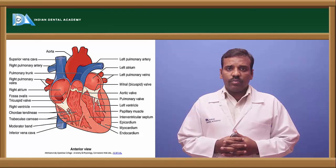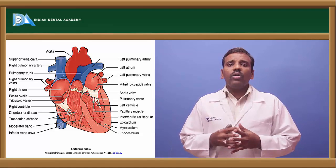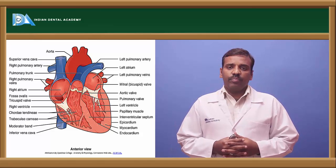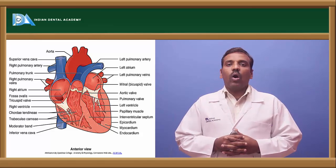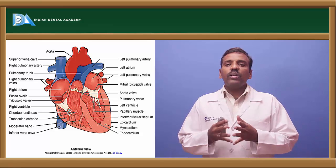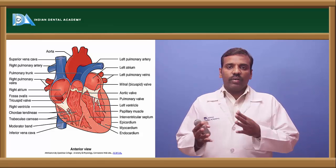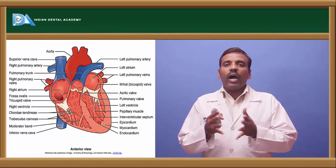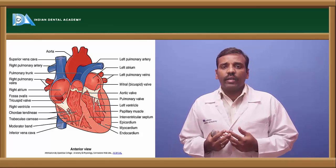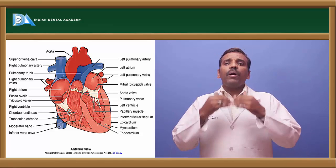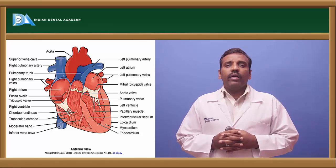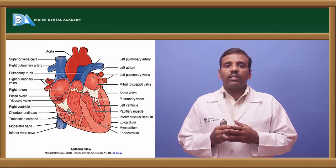The left side of the heart pumps oxygenated blood to the organs and different systems. There are two atria and two ventricles. The atrium (plural: atria) forms the upper part of the heart. The heart contains four chambers: two atria — right upper and left upper — and two ventricles in the lower parts.